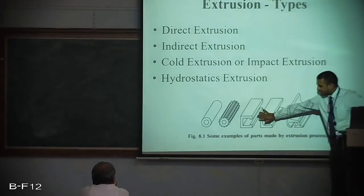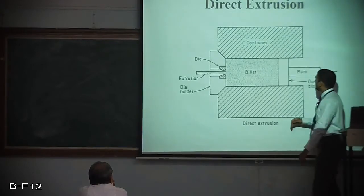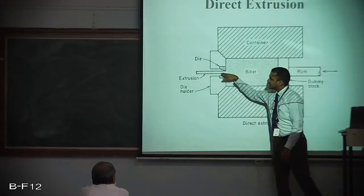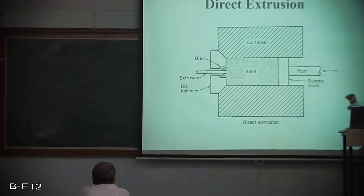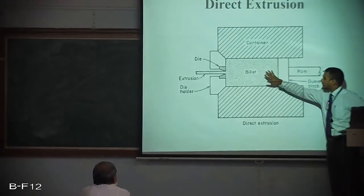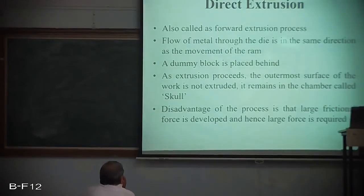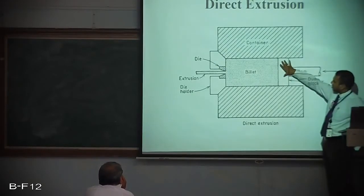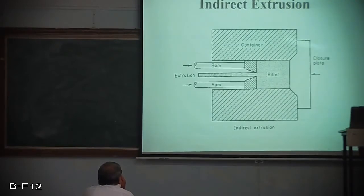These are some examples made by the extrusion process. In direct extrusion, the direction of ram travel is the same as the direction of the extruded product. The direction remains the same for the extruded product as well as for the ram. We also have a special dummy block in the case of direct extrusion.